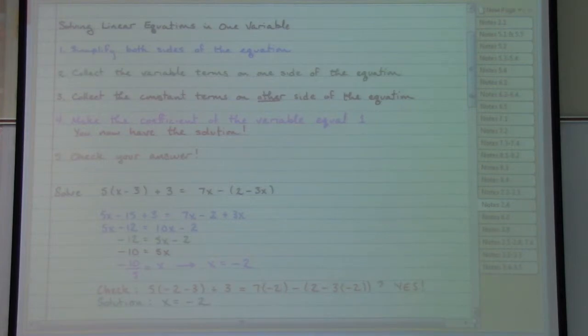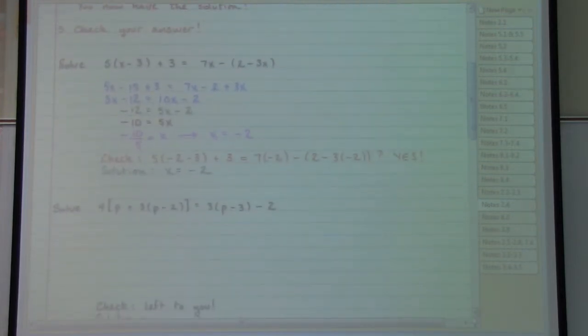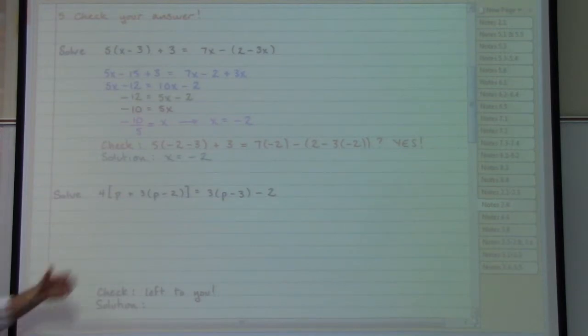So for a new example with a similar feel, working only on the left hand side, inside the brackets I have parentheses so I will start with parentheses and distribute the 3. Everything else I will recopy. Now looking at this new step inside of the brackets there is a little bit of combining like terms that can be performed to give me 4p minus 6.